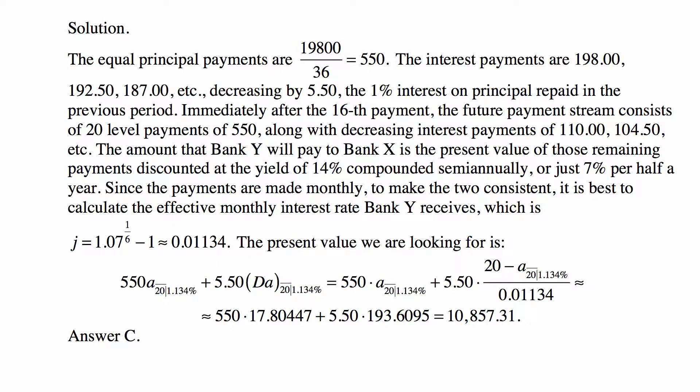Immediately after the 16th payment, the future payment stream consists of 20 level payments of $550, along with decreasing interest payments of $110, $104.50, and so on. It decreases every time by $5.50.